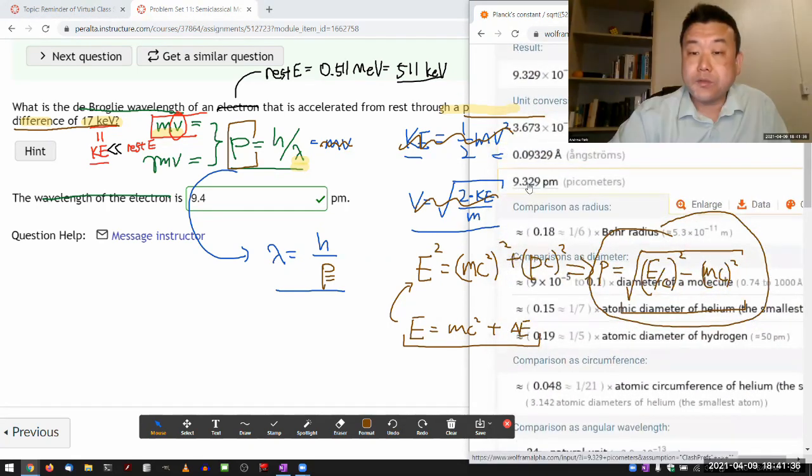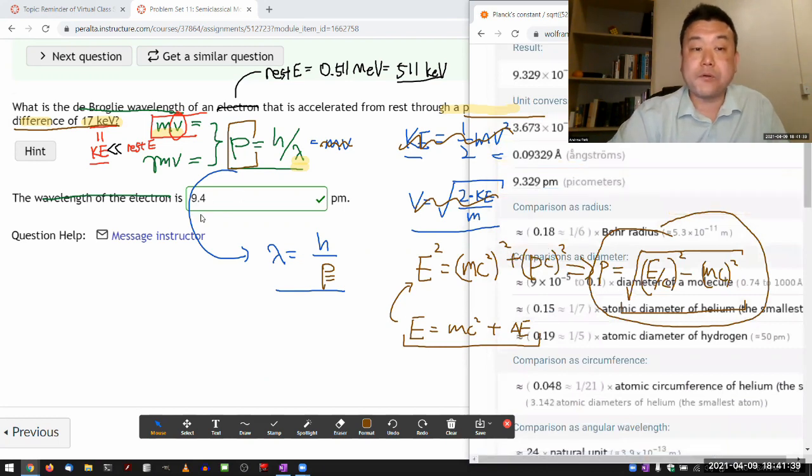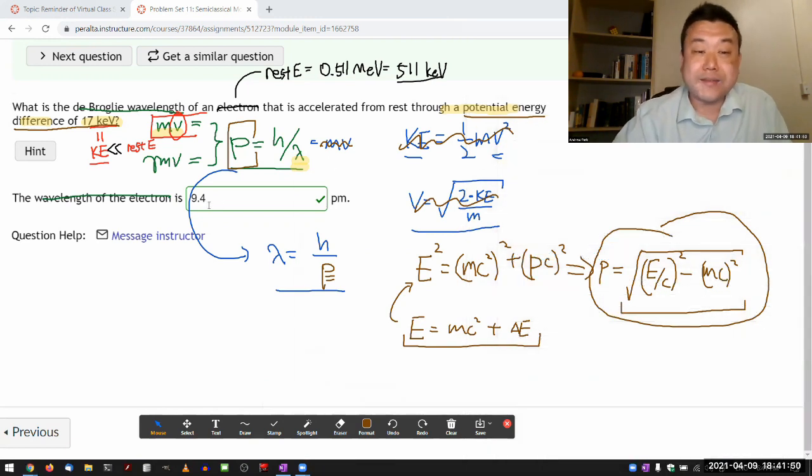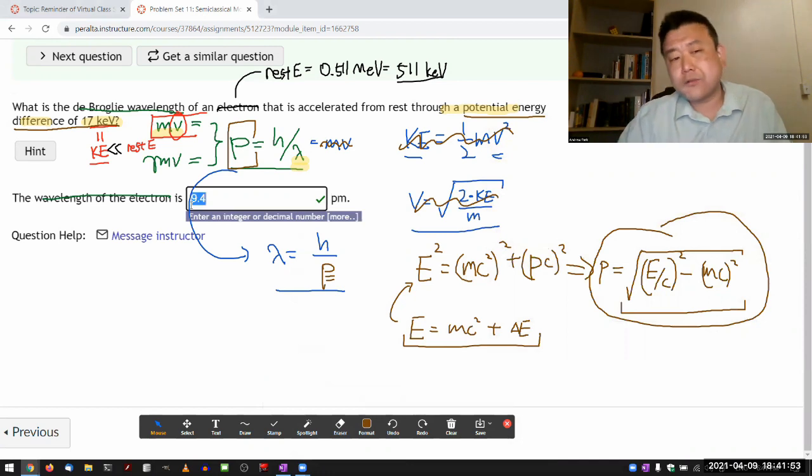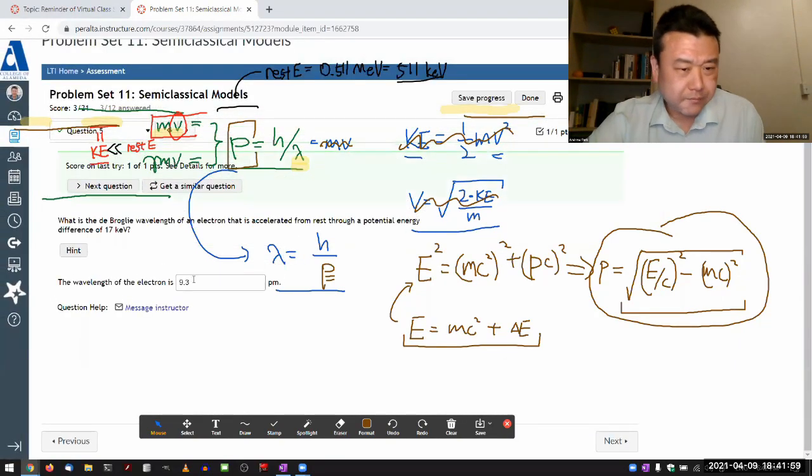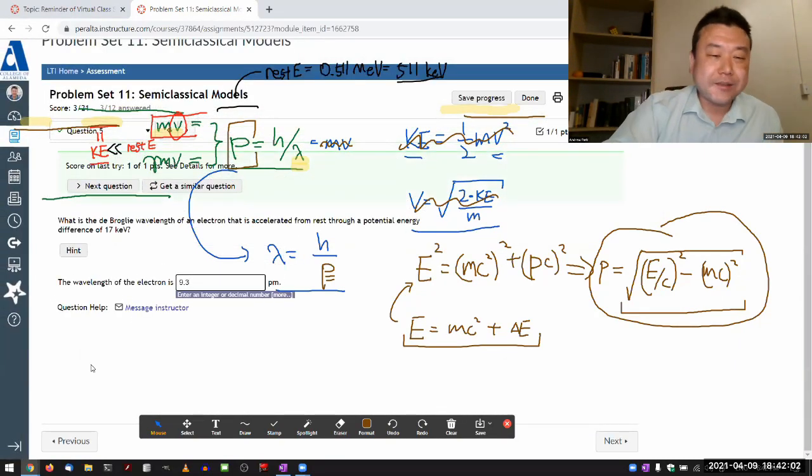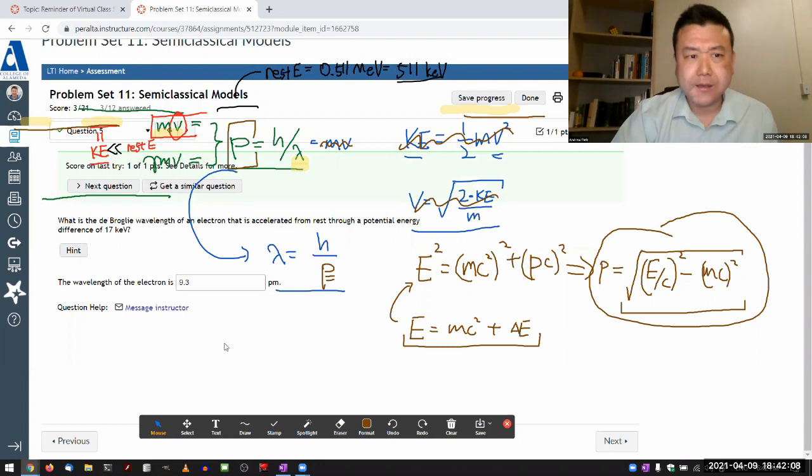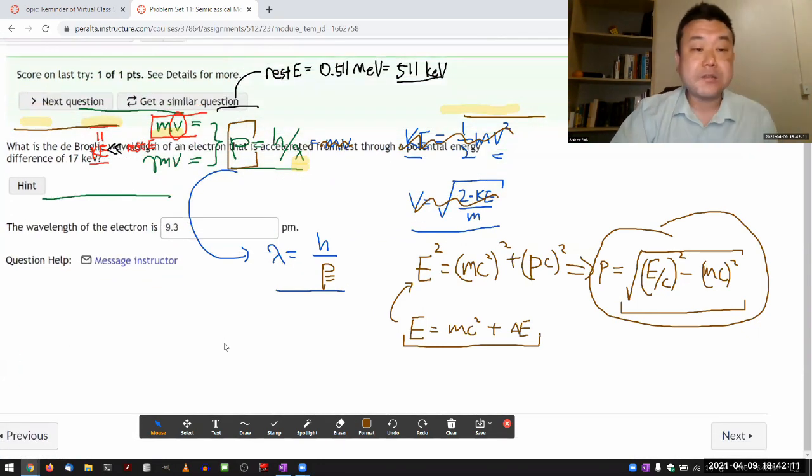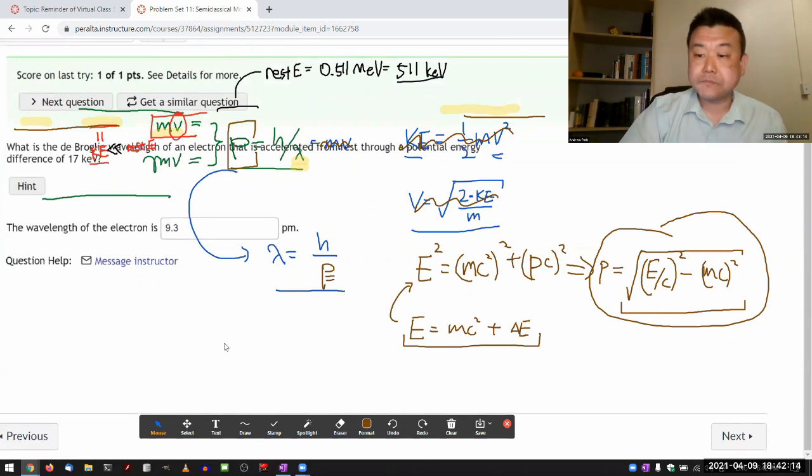So compare 9.33 with 9.4, it's still within one percent, and most of these questions are graded on one percent tolerance, which is why the answer of 9.4 is graded as correct, and it would also grade 9.3 as correct. Sorry, it doesn't let me submit anymore, so I'm pretty sure it would have graded 9.3 as correct if I were able to submit it.